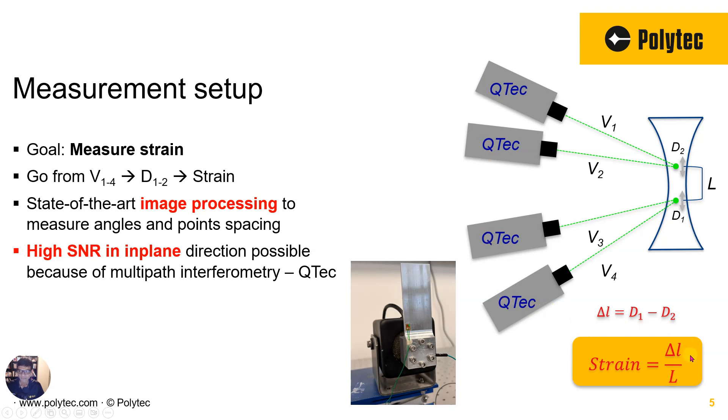If you look at the very basic strain equation, we are after delta L, which is the difference in the vibration amplitude in the in-plane direction. And then we are after L, which is the distance between the two measurement locations. This is also defined as gauge length in terms of people who use strain gauges. So delta L and L, both are extremely important.